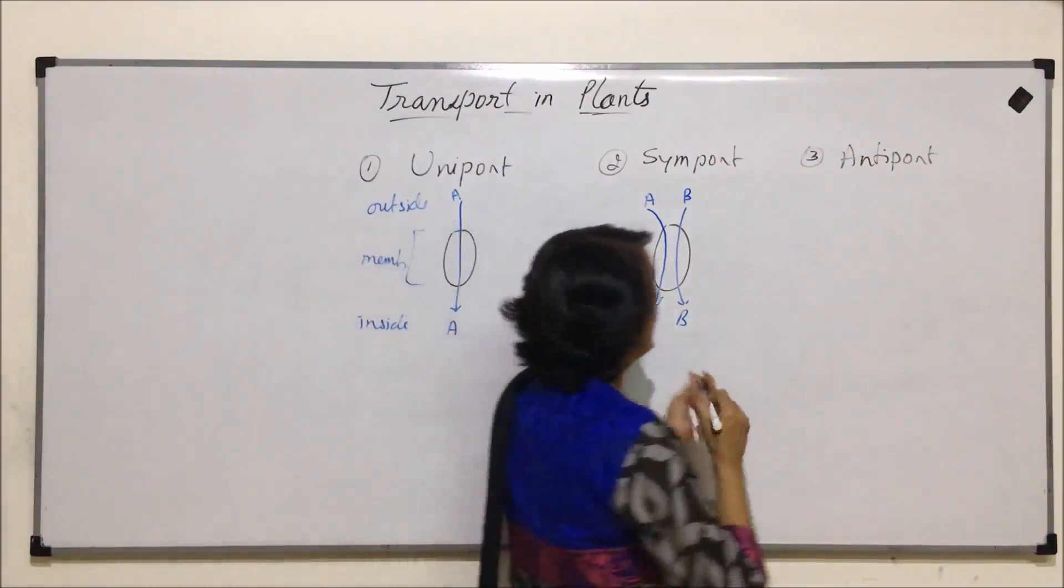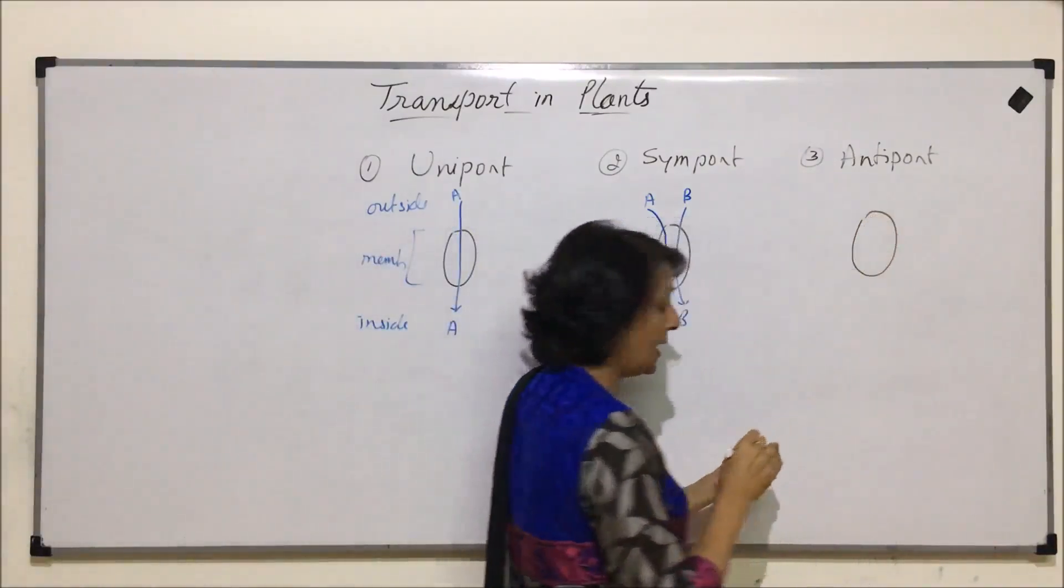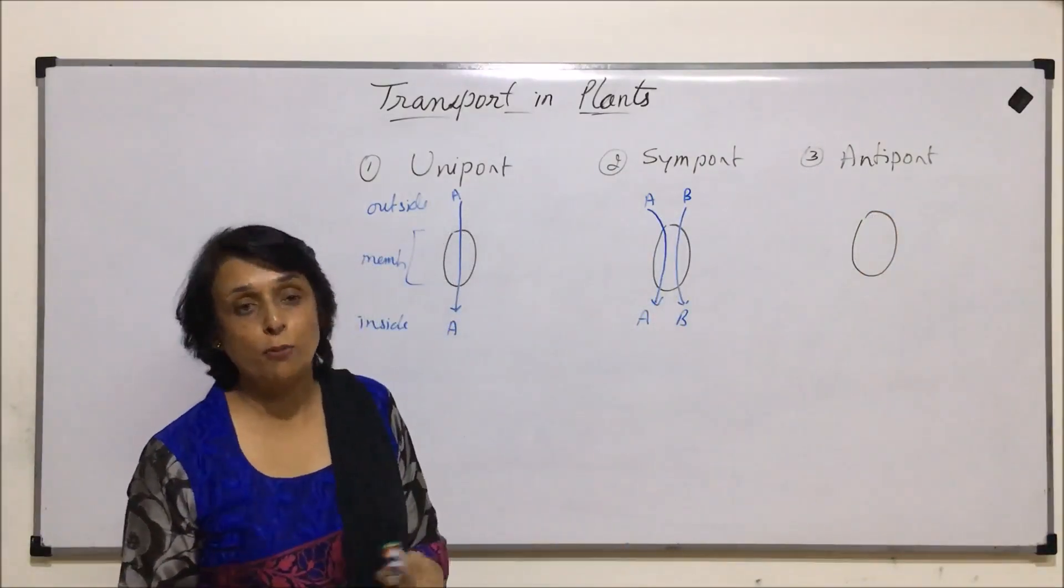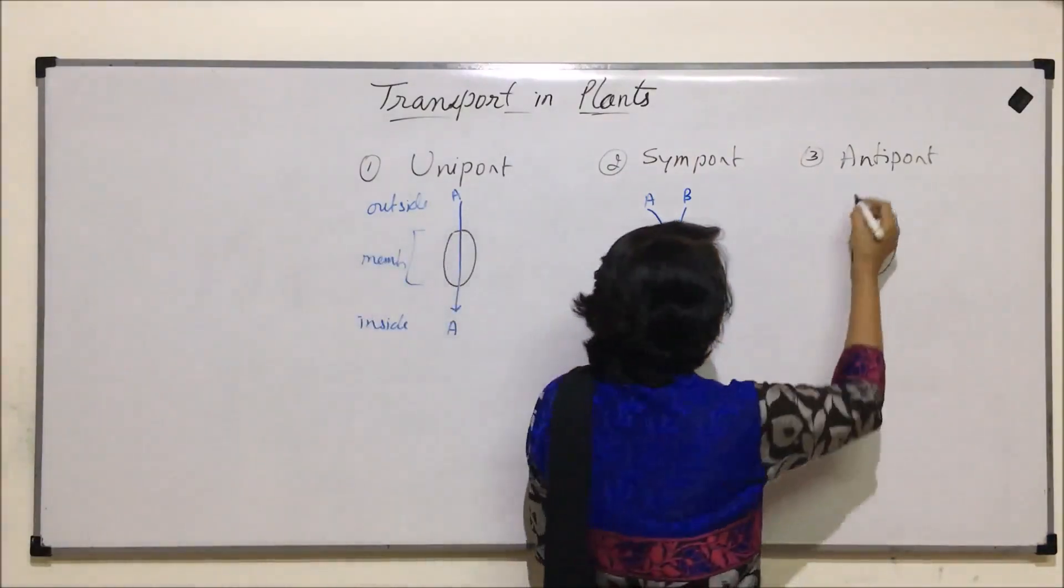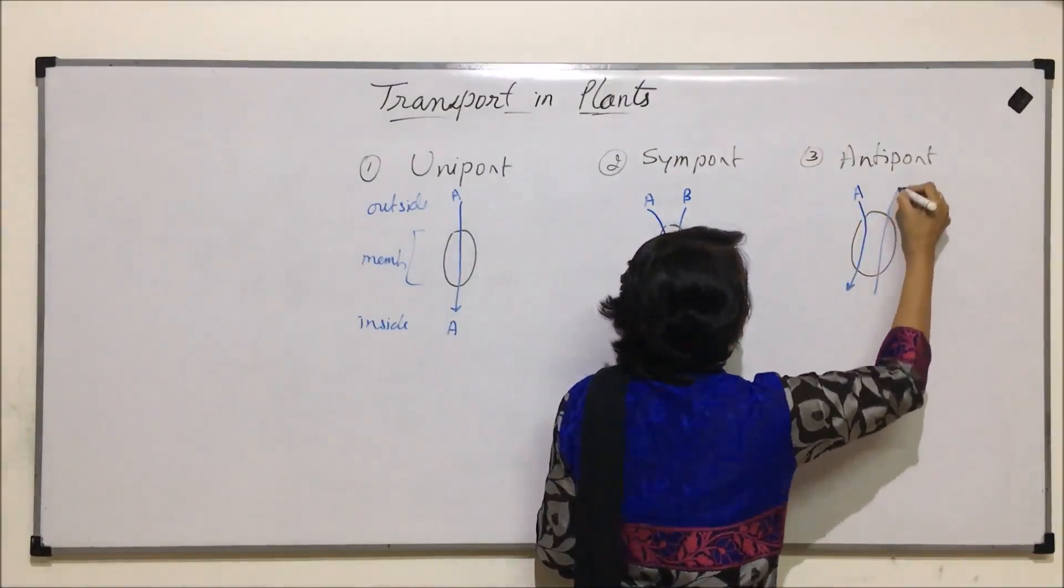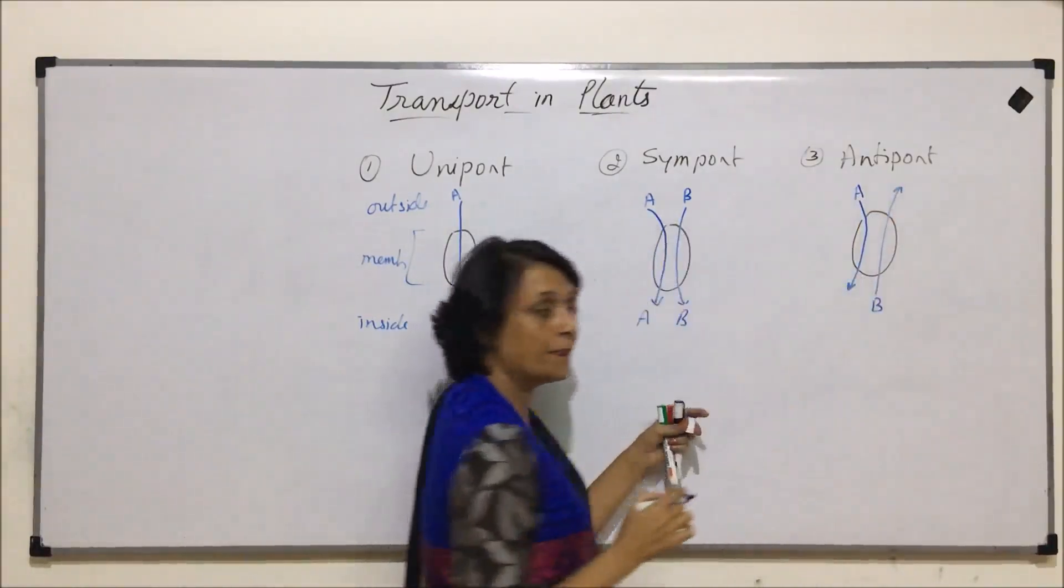The third is when there is a protein which is helping in transport of two substances again but in opposite direction. That means substance A is coming in and substance B is going out.